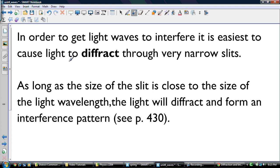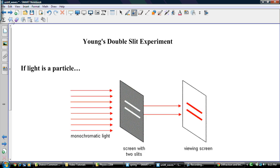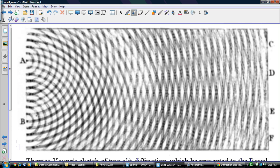In order to get light waves to interfere, it is easiest to cause light to diffract through very narrow slits. As long as the size of the slits is close to the size of the light wavelength, the light will diffract and form an interference pattern. So there's a good diagram in your book to see this, but I think I have one here that we did in class.